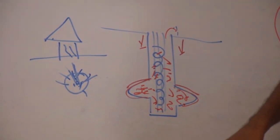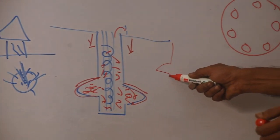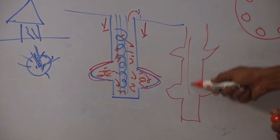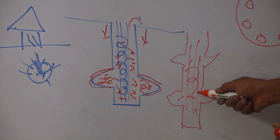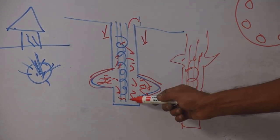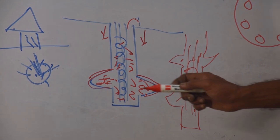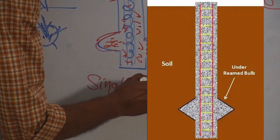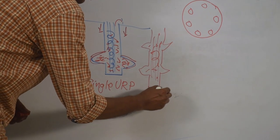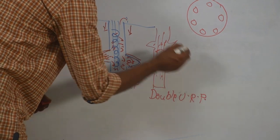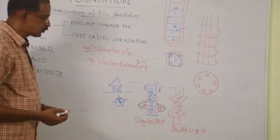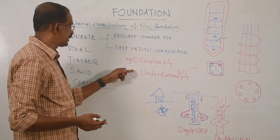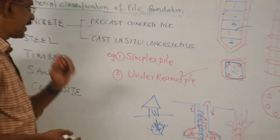There can be one bulb — called a single under reamed pile — or two bulbs — called a double under reamed pile. Under reamed piles are used in expansive soils; an example of an expansive soil is black cotton soil.